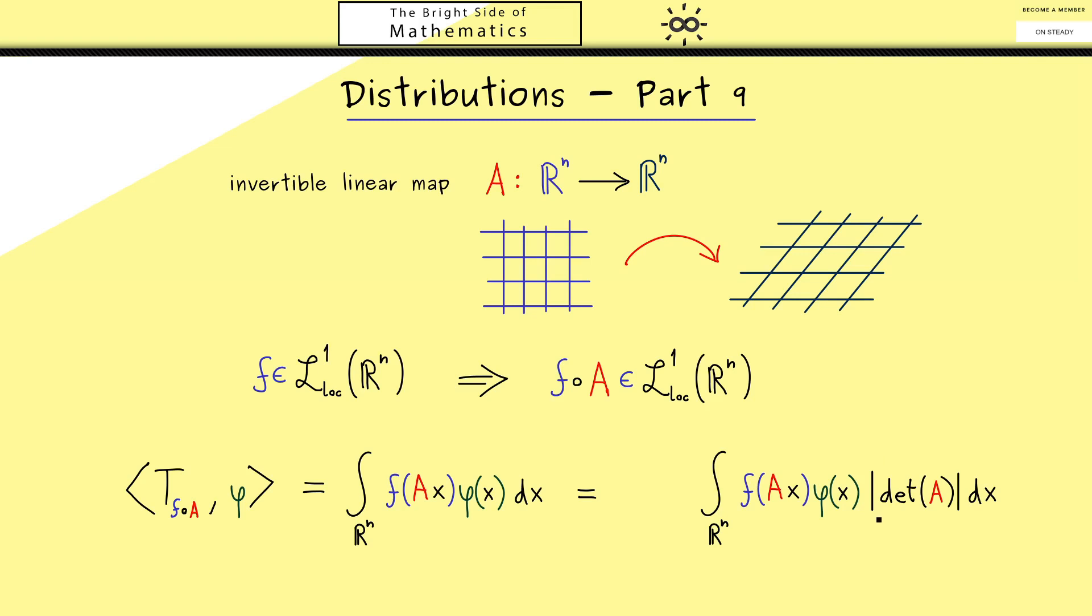Indeed the absolute value of this determinant here is what we need to apply the change of variables formula. Hence in order to include it here we have to divide by it at the beginning. And here please note we don't divide by 0 because we have an invertible map.